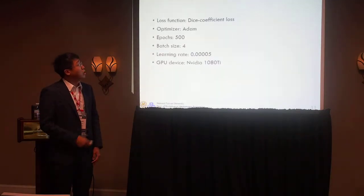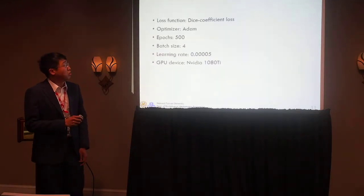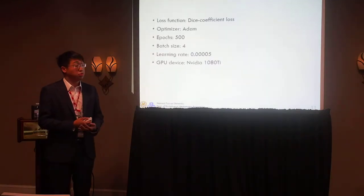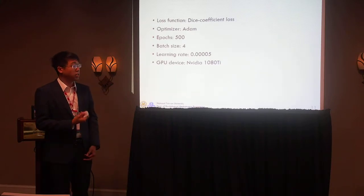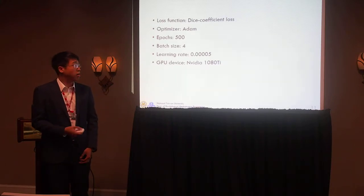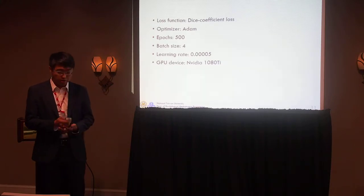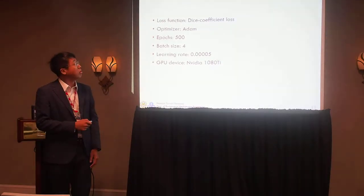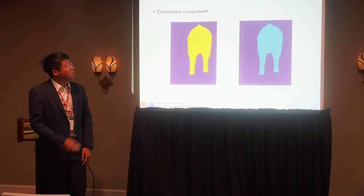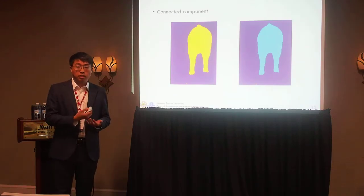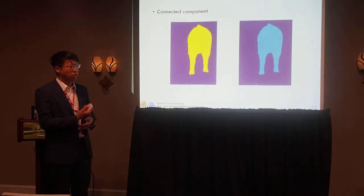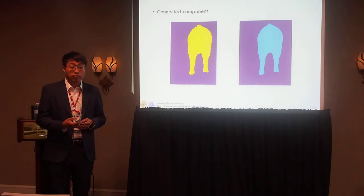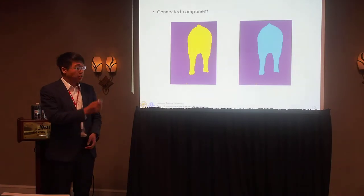These are my training details. The loss function I chose is dice coefficient loss, the optimizer is Adam, and the number of epochs is 500. After the semantic segmentation, I will use image processing to find the ratio.